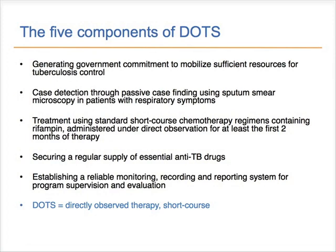Directly observed therapy itself fits into an overall program known as DOTS — directly observed therapy short course — which is much more than simple administration of medicine. The DOTS strategy outlined by the World Health Organization includes: a government commitment to mobilizing sufficient resources for TB control; case detection through sputum smear microscopy in patients with symptoms; treatment with standard short course chemotherapy regimens; securing a regular supply of essential anti-TB drugs; and establishing a reliable monitoring, recording, and reporting system for program supervision and evaluation. The treatment of the individual patient must fit into this overall context for the TB program to be successful.